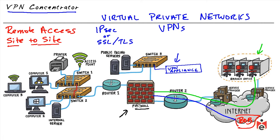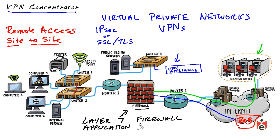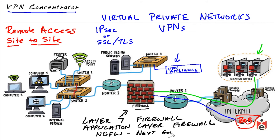Firewalls can also inspect at the upper layers of the protocol stack, including the application layer, making decisions on whether to forward traffic based on what's happening at layer 7. For example, Facebook could be allowed but specific applications within Facebook could be denied — very granular control. A firewall with those capabilities is called a layer 7 firewall, application layer firewall, or next-generation firewall — all referring to the same ability to examine the full protocol stack including upper layers.